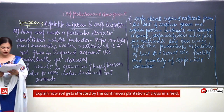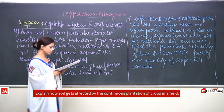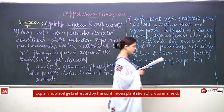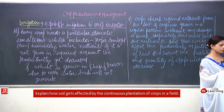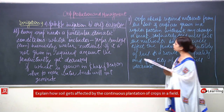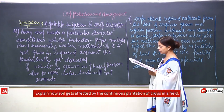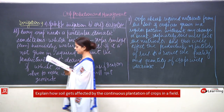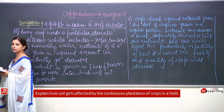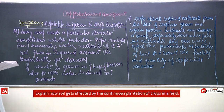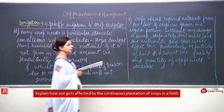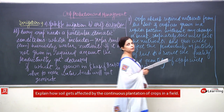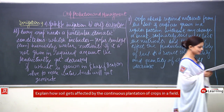Question nine — what are weeds and how can we control them — will not be discussed because it has already been covered earlier. Question ten on arranging boxes in a flow chart for sugarcane crop production will also be done independently by students since the agricultural practices keywords have already been discussed.